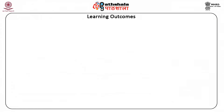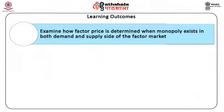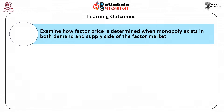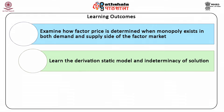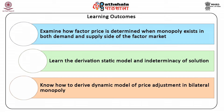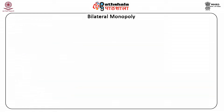After studying this module you shall be able to examine how factor price is determined when monopoly exists in both demand and supply sides of the factor market; learn the derivations of the static model and indeterminacy of solution; and know how to derive the dynamic model of price adjustment in bilateral monopoly.